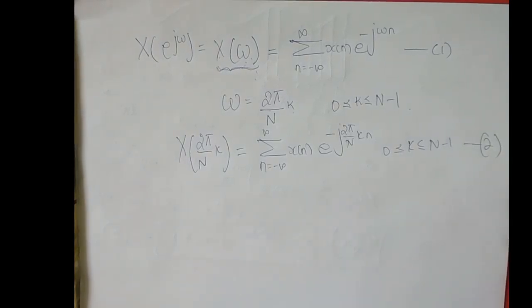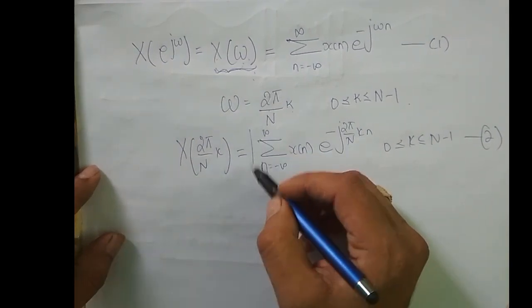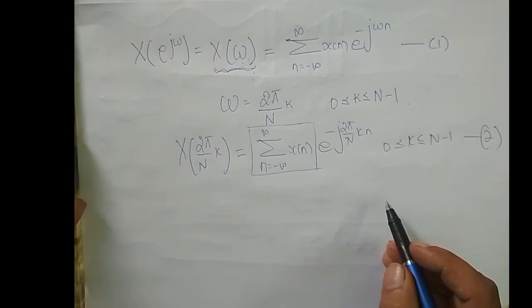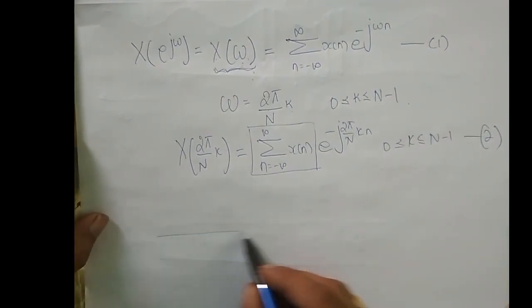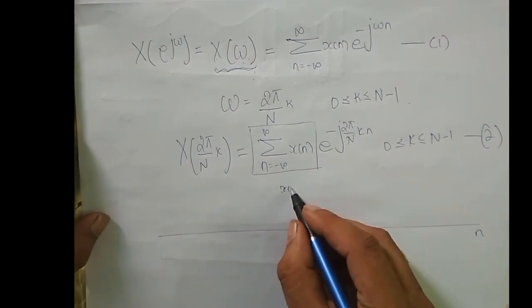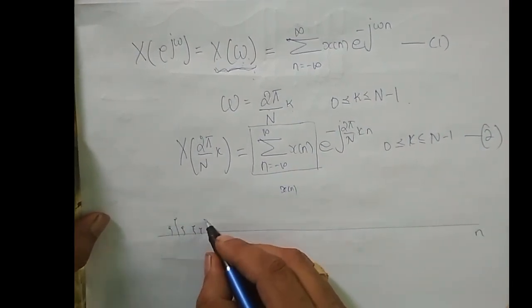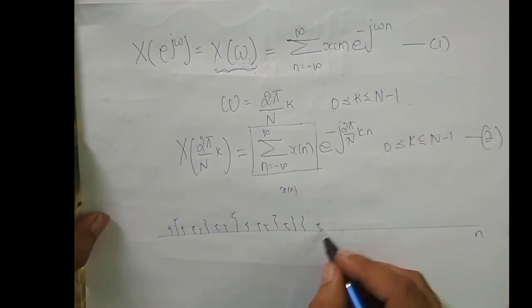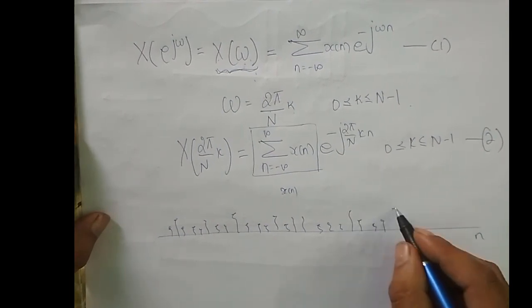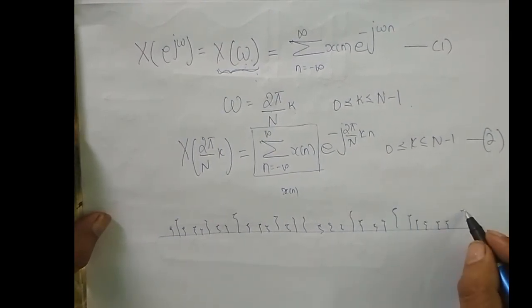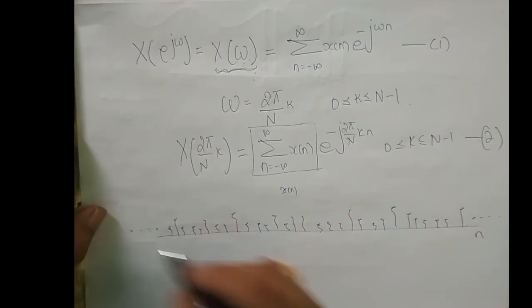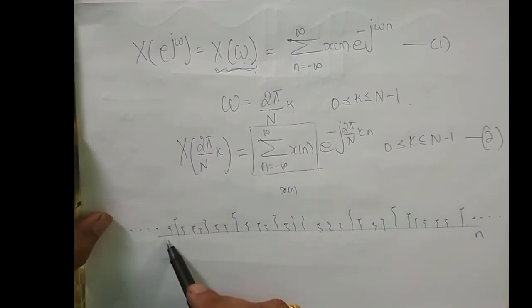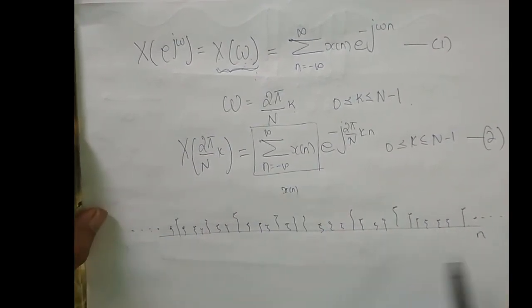Here we have an infinite-length discrete-time sequence — the summation from n = -∞ to ∞ of x[n]. To convince you graphically: if we plot n vs x[n], the samples vary from -∞ to +∞.